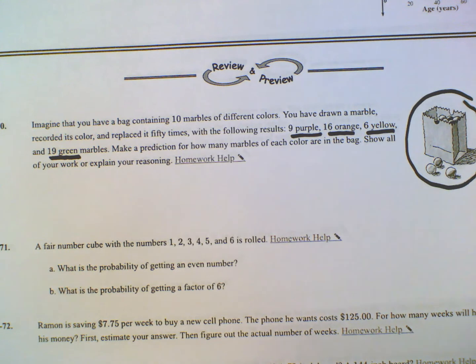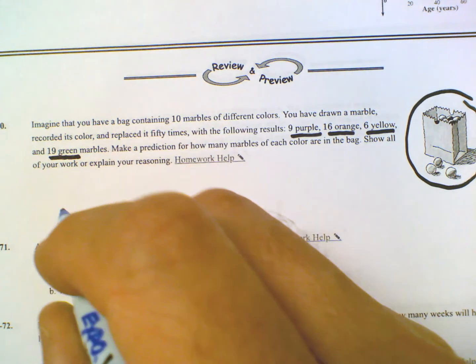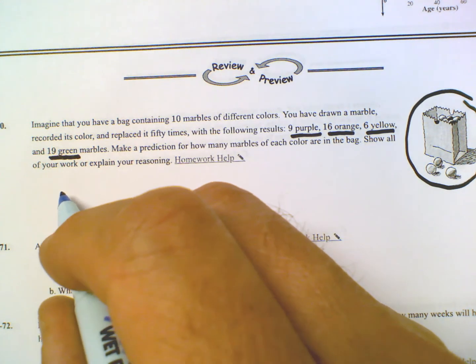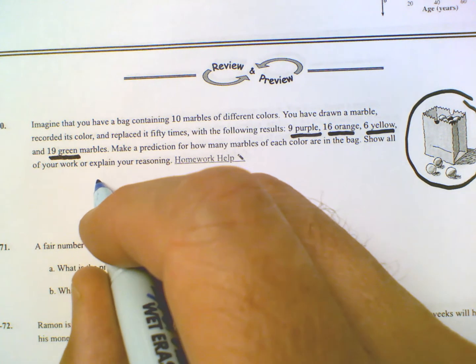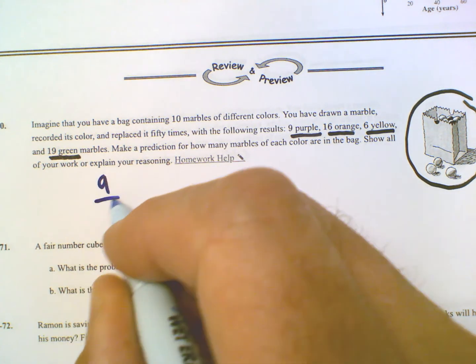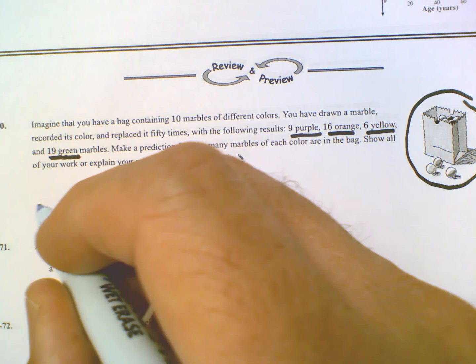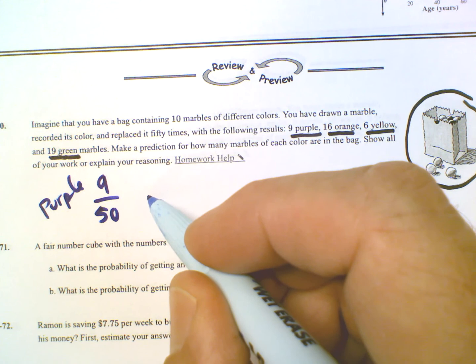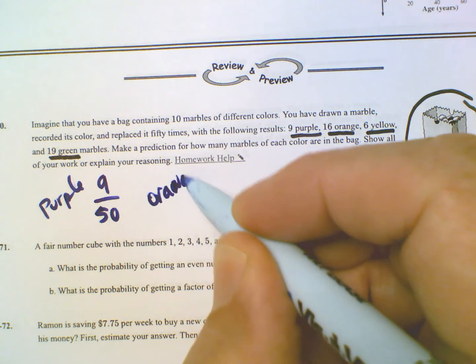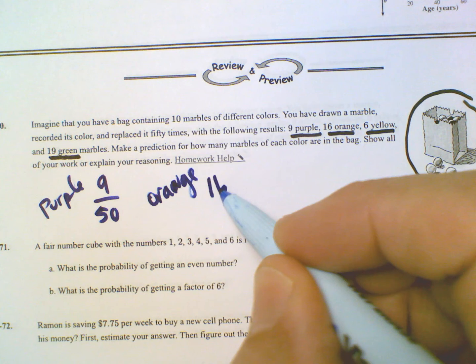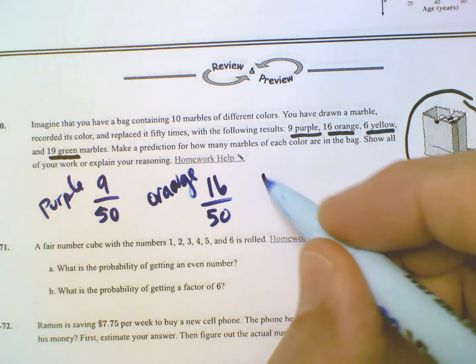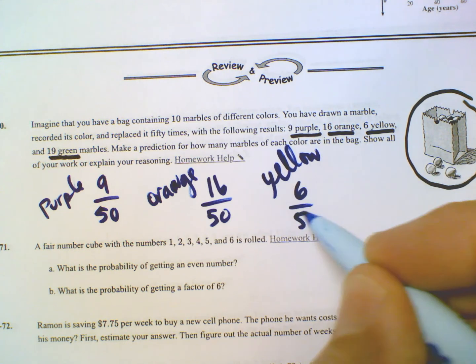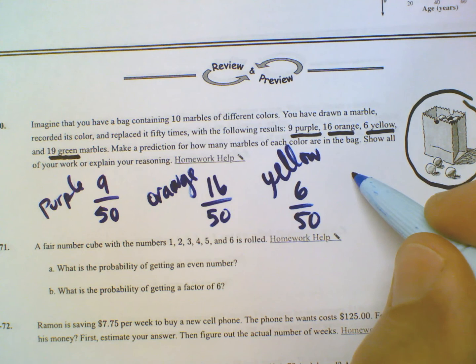So our experimental probability, this is the experimental probability. So our experimental probability in this case for purple is 9 out of 50. That's the purple. For orange, orange is 16 out of 50. For yellow, yellow was 6 out of 50.